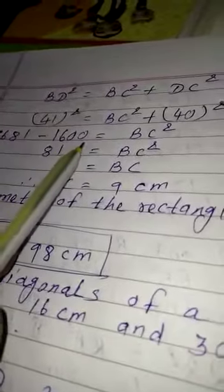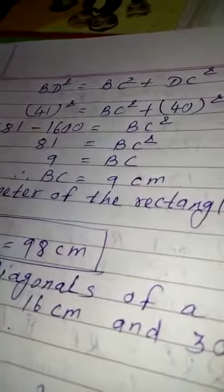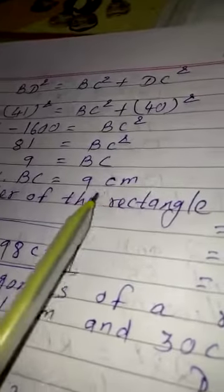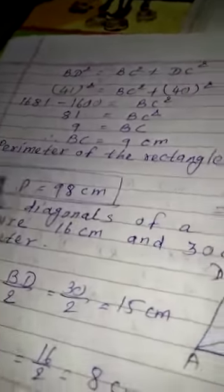So, 1681 minus 1600 is equal to BC square. Therefore, BC is equal to 9 cm.